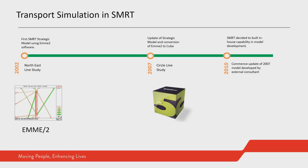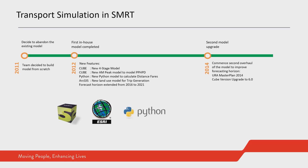In 2010, management decided it was very important for the company to have the capability to build our own model, and the transport modeling team was formed. The new modeling team started to update the 2007 CUBE model. One year later in 2011, the team decided we should abandon that model. Instead of fixing a model developed by an external consultant, we felt constrained by the existing structure and methodology of the 2007 model and unable to freely express what our model should be. After careful consideration, we made a bold decision to start a new model from scratch. 2011 was a very important year for planning in SMRT — from then on, we never looked back.